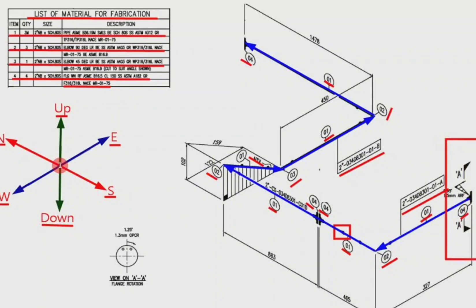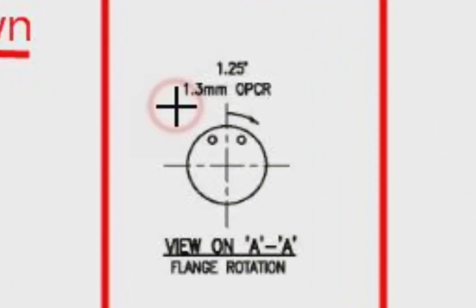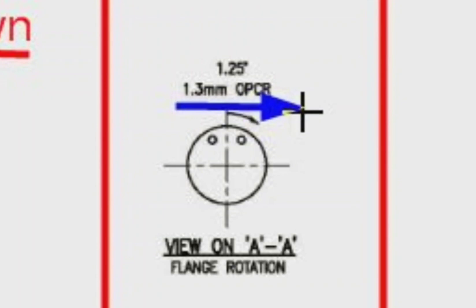An additional view is given in this part of the drawing related to the rotation of the flange holes — Section AA. This view is explained here: the view AA shows that the holes of the flange will rotate to the right by 1.3 millimeters.